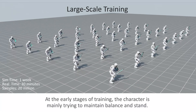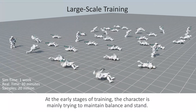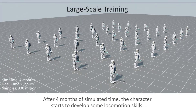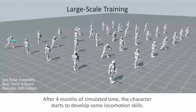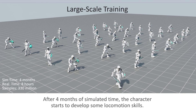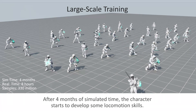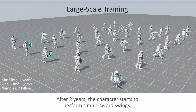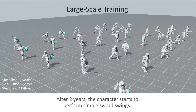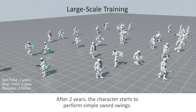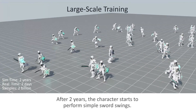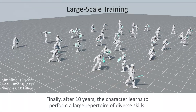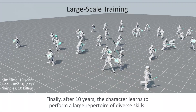At the early stages of training, the character is mainly trying to maintain balance and stand. After 4 months of simulated time, the character starts to develop some locomotion skills. After 2 years, the character starts to perform simple sword swings. Finally, after 10 years, the character learns to perform a large repertoire of diverse skills.